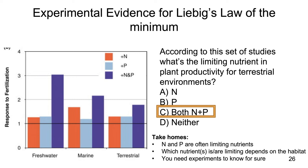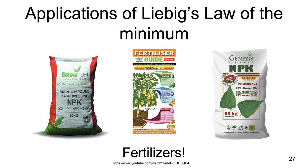There are a lot of practical applications for Liebig's Law of the Minimum, and one of the most obvious is fertilizers. Fertilizers are often referred to as NPK — different ratios of nitrogen, phosphorus, and potassium, like 23 to 10 to 6. This is all about adding those nutrients that are typically limiting in an environment. Let's think about some examples of fertilizers and what they do for plants by watching this video.